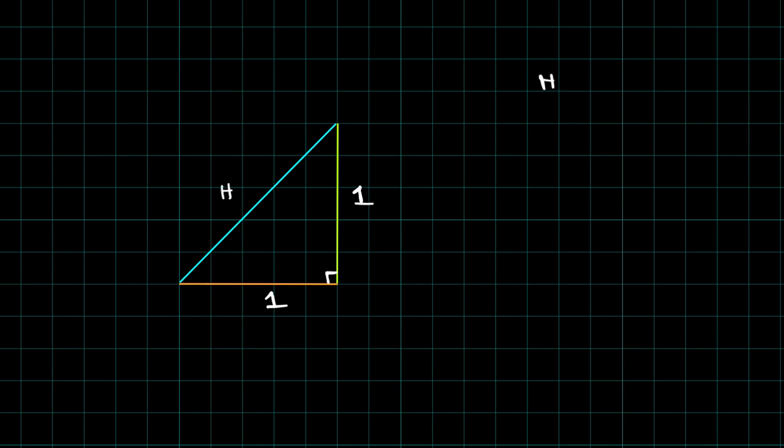Now let me draw another diagram. This time I am creating a base and a height such that they are equal — an isosceles triangle. Let's say this one is one unit. Let me write one for each. The green and the orange line are perpendicular. This is the hypotenuse. By Pythagoras theorem, H squared is 1 squared plus 1 squared, H squared equals 2, H equals square root of 2.